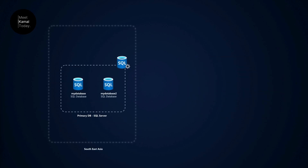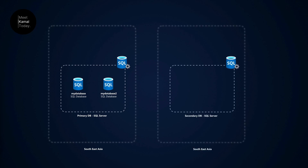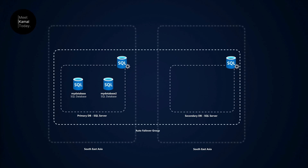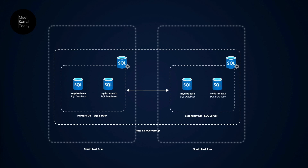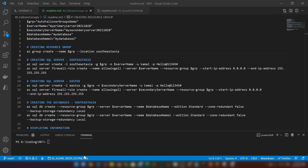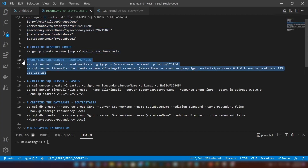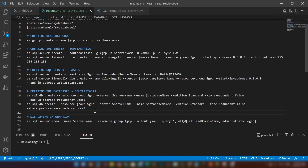Today we are going to implement this. I'm going to create a SQL server in the Southeast Asia region with two databases, and then create another SQL server in the East US region. After that I'm going to create an autofailover group that will replicate the databases from Southeast Asia to East US. Using this script I will implement the architecture shown in the diagram, creating the resource group, both SQL servers, and finally the two databases in Southeast Asia.